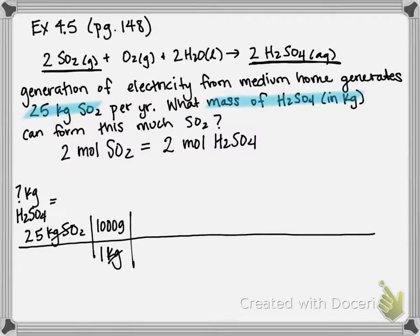Now in grams, we want to get out of grams of SO2 and into moles of SO2. So we're going to use its molar mass again. So the molar mass of SO2 is 64.07 grams per mole, and you can calculate that from the periodic table. So now we're out of grams, we're into moles of SO2.